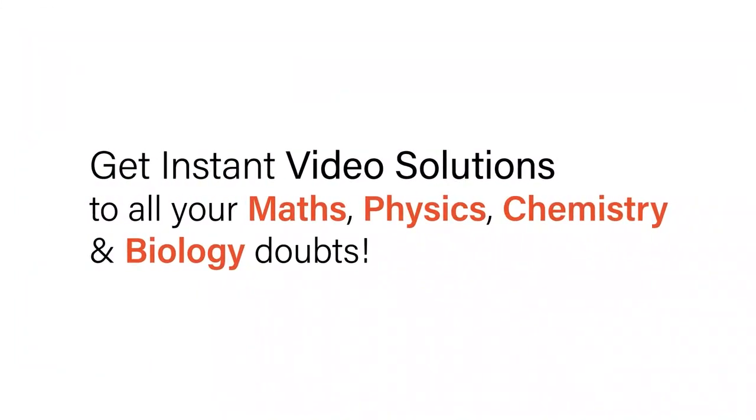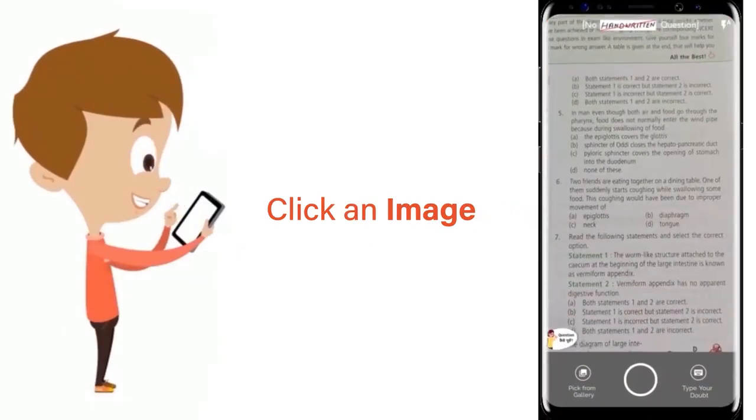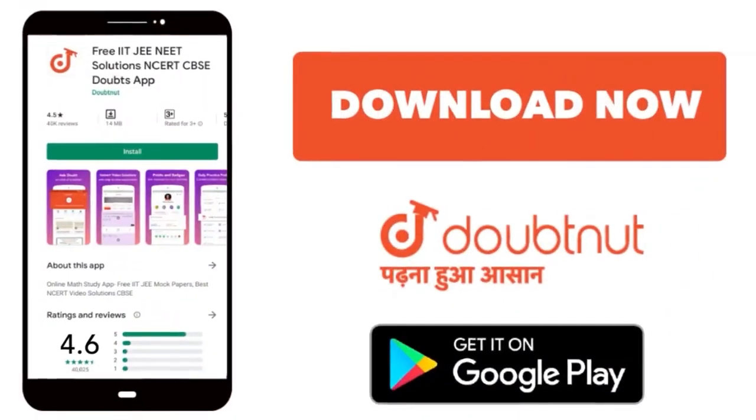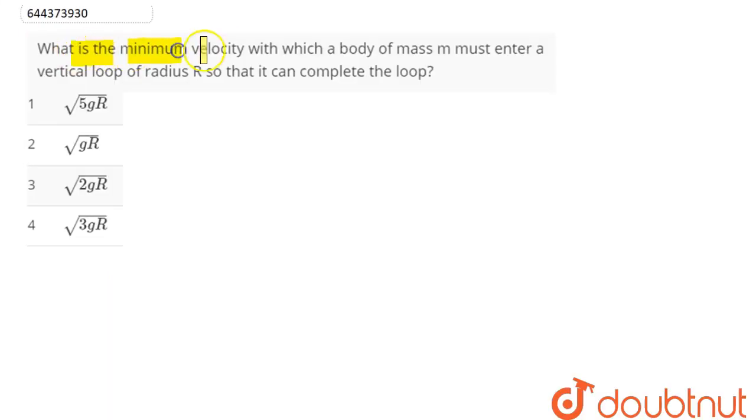With Doubtnet, get instant video solutions to all your math, physics, chemistry, and biology doubts. Just click the image of the question, crop the question, and get instant video solution. Download Doubtnet app today. Question is: what is the minimum velocity with which a body of mass m must enter a vertical loop of radius R so that it can complete the loop?